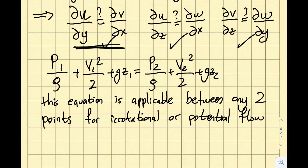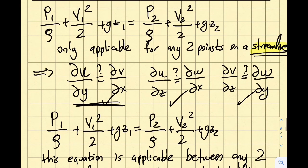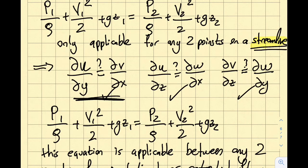You don't have to be on the same streamline. But let's assume I check the irrotational condition and it's not satisfied. I understand this is not irrotational flow but rather rotational flow. I can still use Bernoulli's equation as long as the two points are on a streamline.